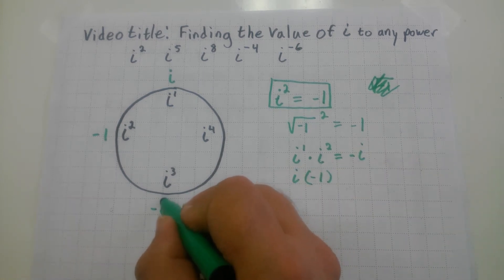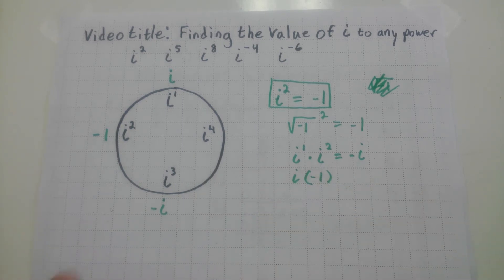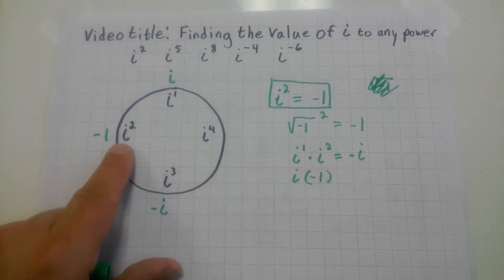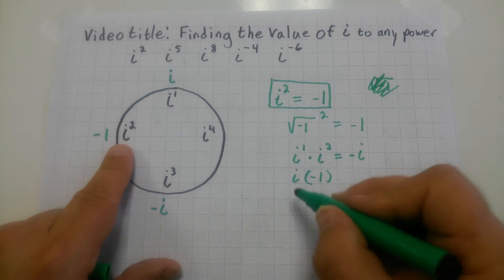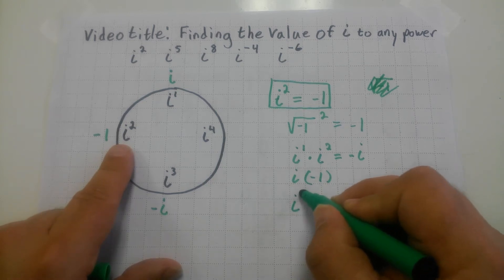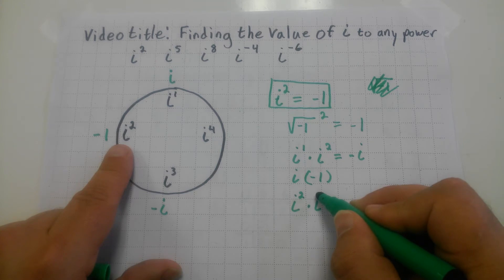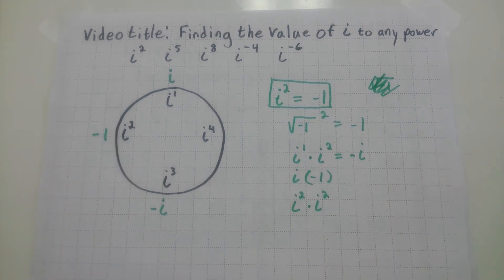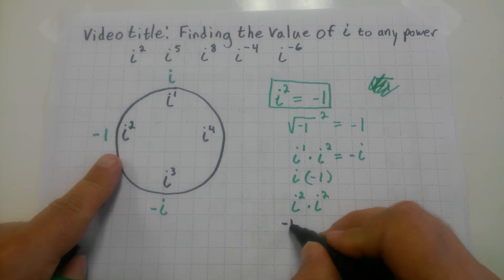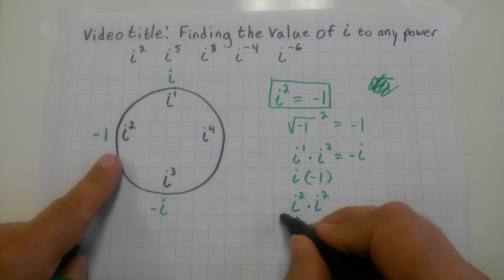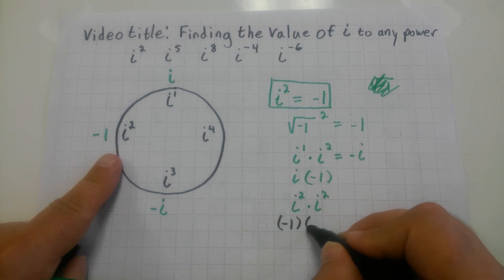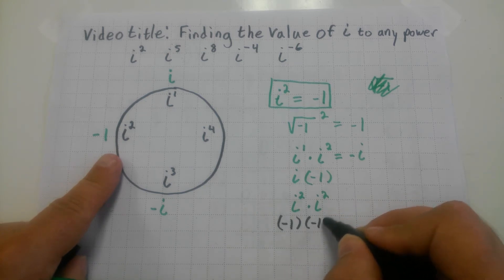i to the third — that's going to be i to the first times i to the second. So that's going to give me i times negative one. So i to the third equals negative i.